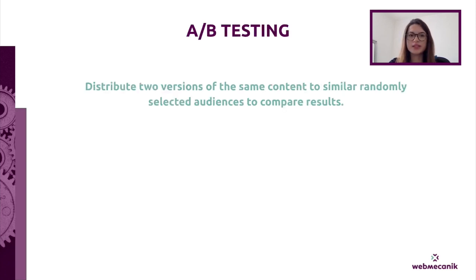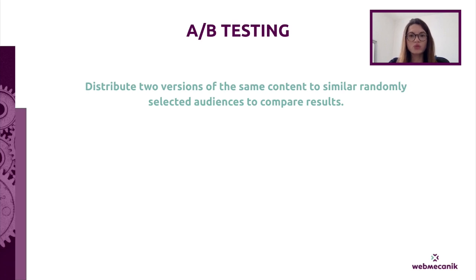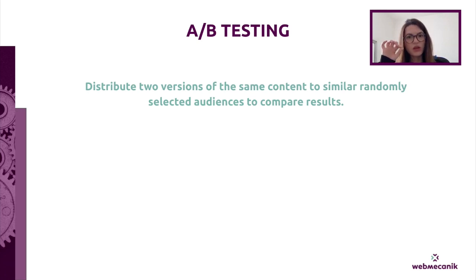Next we have A/B testing — a technique that can be used throughout your conversion funnel. It will allow you to improve your email opening rates, landing page conversion rates, or your CTA click rates. A/B testing shoots or publishes two versions of the same content to similar randomly constituted audiences to compare results. In concrete terms, it is a method that allows you to change one parameter — on a landing page, an email, or a call to action — to understand the elements that allow you to achieve a better result.